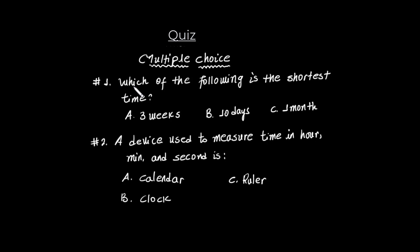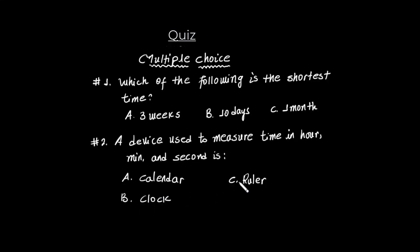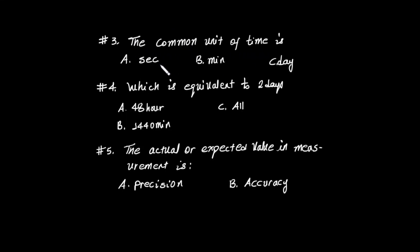Multiple choice review questions. Question 1: Which of the following is the shortest time? A) three weeks, B) ten days, C) one month. Question 2: A device used to measure time in hours, minutes, and seconds is: A) calendar, B) clock, C) ruler. Question 3: The common unit of time is: A) second, B) minute, C) day. Question 4: Which is equivalent to two days? A) 48 hours, B) 1440 minutes, C) all. Question 5: The actual expected value is: A) precision, B) accuracy.